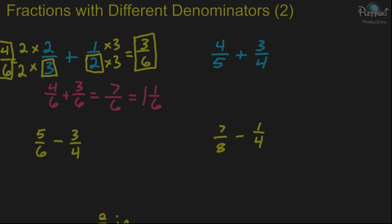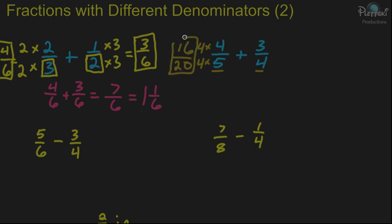The next example: we have 4 fifths plus 3 fourths. What's the least common multiple of 5 and 4? They both go into 20. So we're going to change 4 fifths so it has a 20 on the bottom. We do that by multiplying the top and the bottom by 4. And 5 times 4 is 20, and 4 times 4 is 16, so you have 16 over 20.